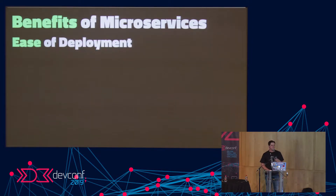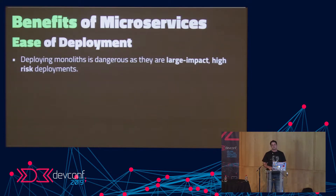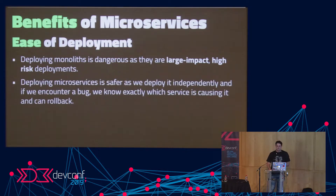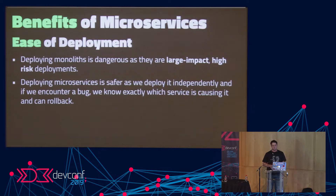Another benefit of microservices is ease of deployment. Deploying monoliths is dangerous — even a one-line change in a million-line monolith means deploying the entire thing. If you missed a semicolon, it's a very high-risk deployment because failure means the entire site falls over. With microservices, deploying is a lot safer because we deploy isolated services independently. If a wishlist service falls over, we can isolate the problem, roll back that service, and restore functionality.